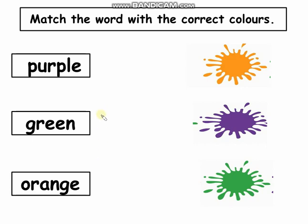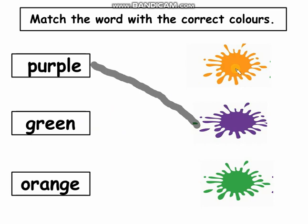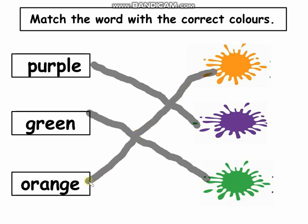Find out the purple color with me — where is purple color? Here it is — yes, of course, this is purple color, I can match it! Now where is green color? Find out the green color with me — yes, of course, this is green color, I can match it! Orange — find out the orange color with me — here it is! Yes, of course, I can match it. Great job, Alhamdulillah, I have finished my task!